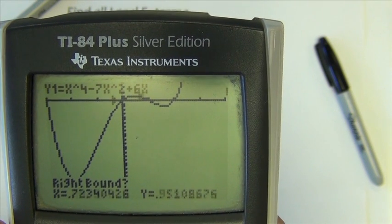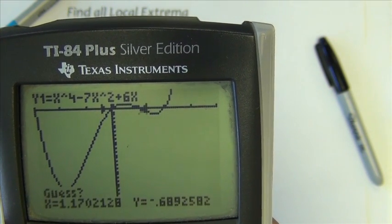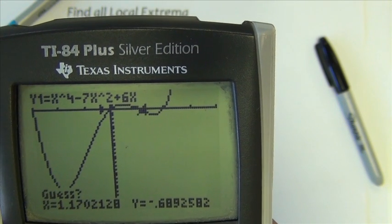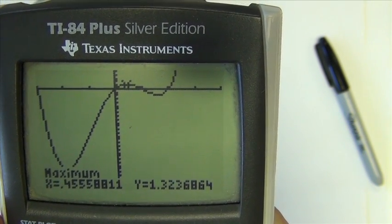Now it asks for a right boundary. Now I'm going to go to the right of that maximum. Hit enter. It's going to ask me to guess, which I don't have to do. I'm going to hit enter again, and there's my maximum value.